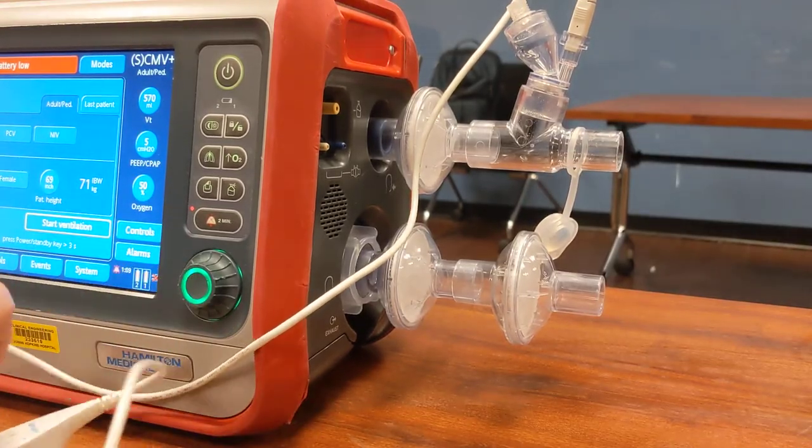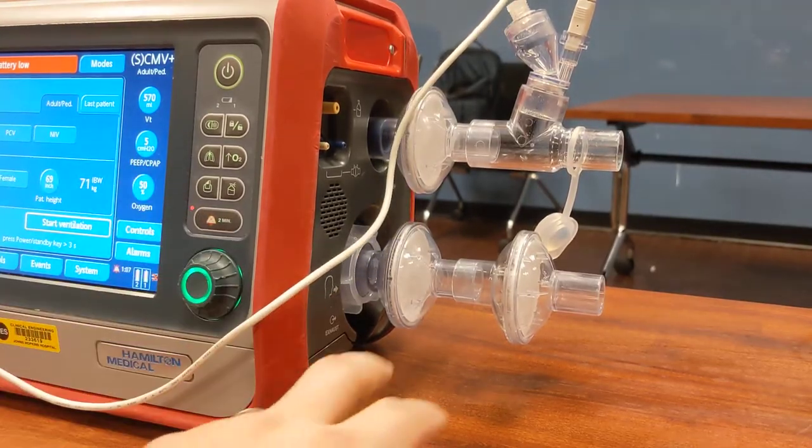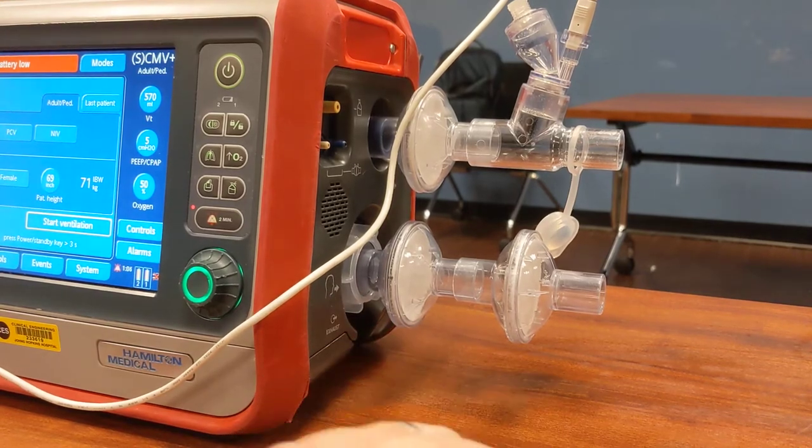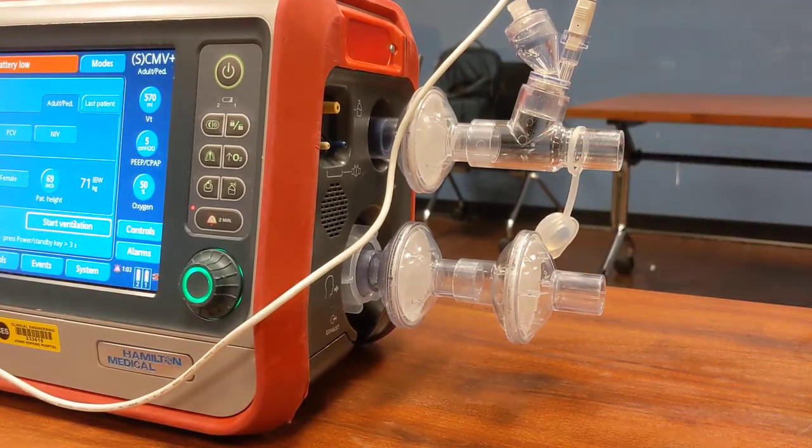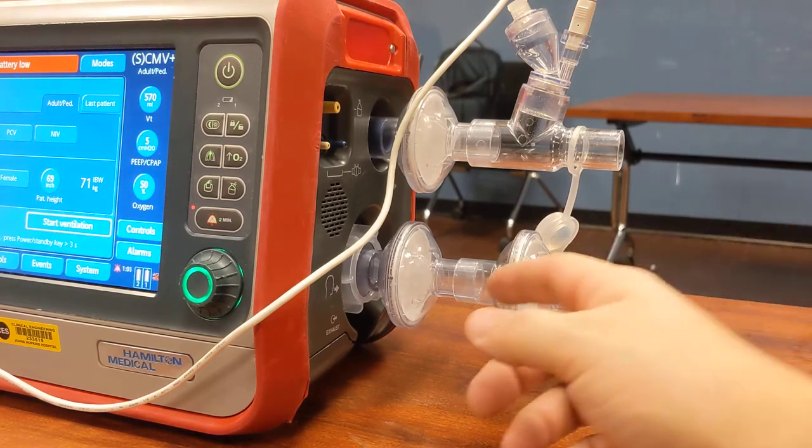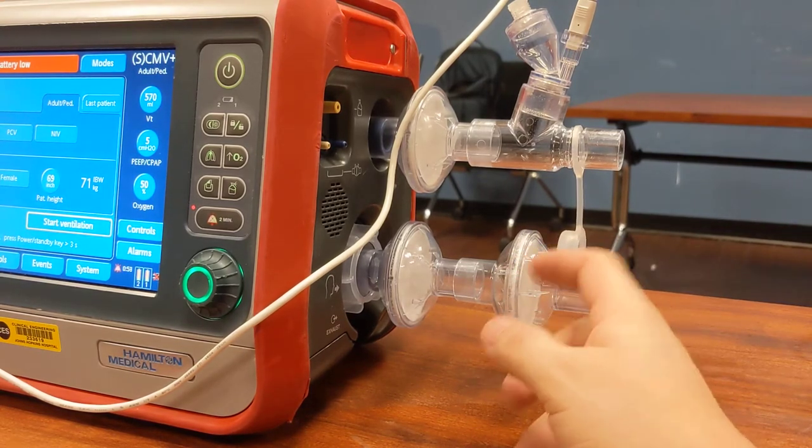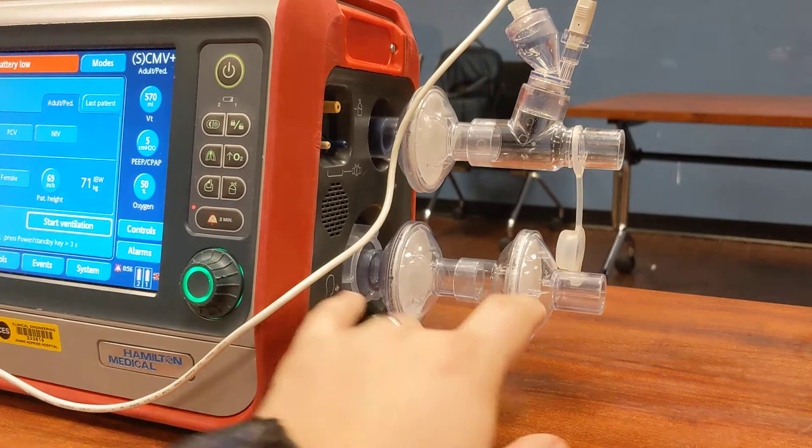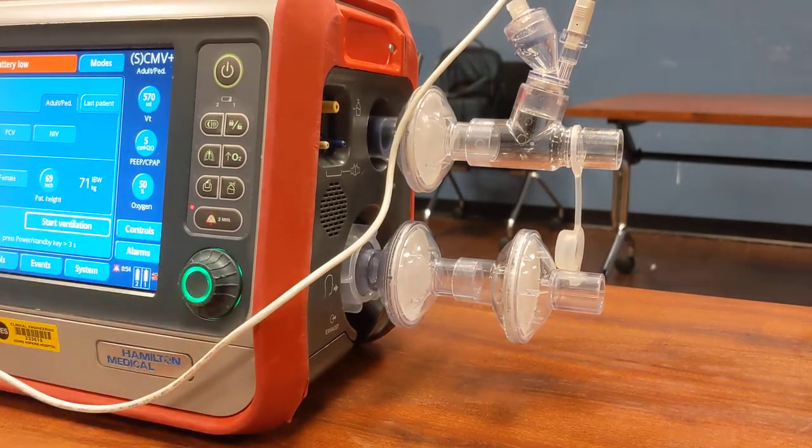And the second thing it does is it actually protects the ventilator. Sometimes with this aerogen setup, you can actually get medication that comes all the way through the circuit back to the ventilator. And sometimes it'll actually make this first filter wet. So we want to put two in there to protect the ventilator.